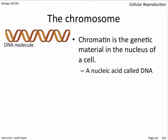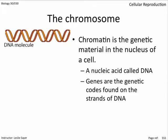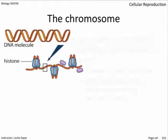If cells were to divide to make sperm cells, these genes would be passed on to offspring should one of the sperm cells fertilize an egg cell. Genes are the genetic codes found on the strands of DNA and are passed down from one generation to the next. When we wrap DNA around a bunch of proteins called histones, we get a strand of chromatin.